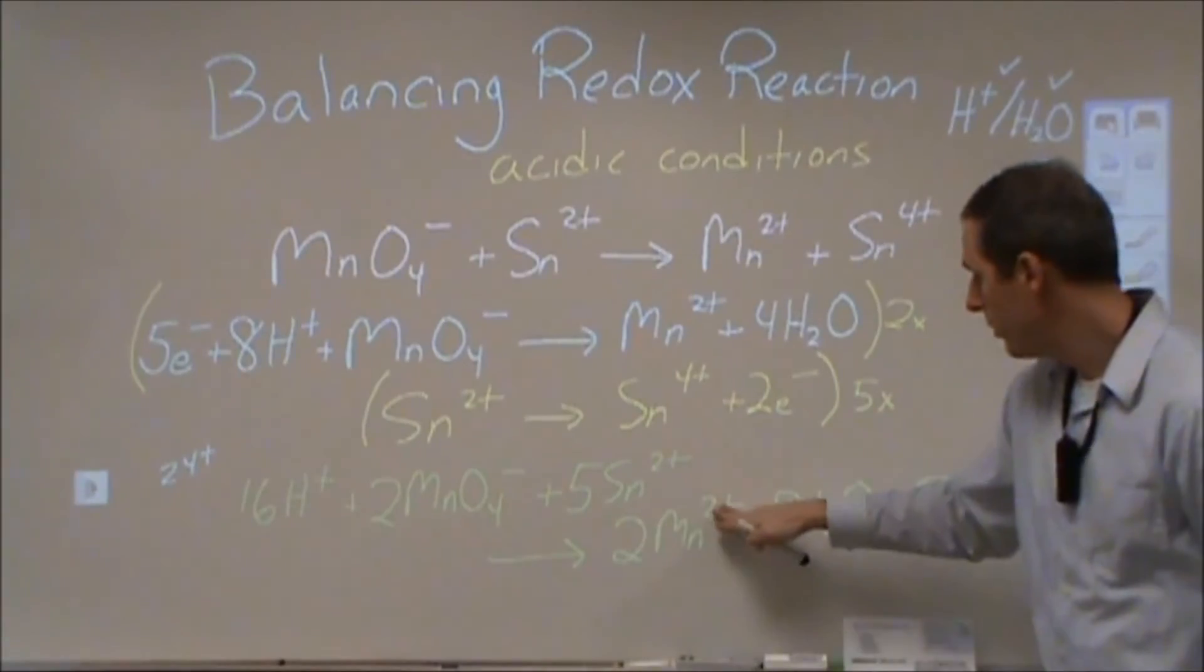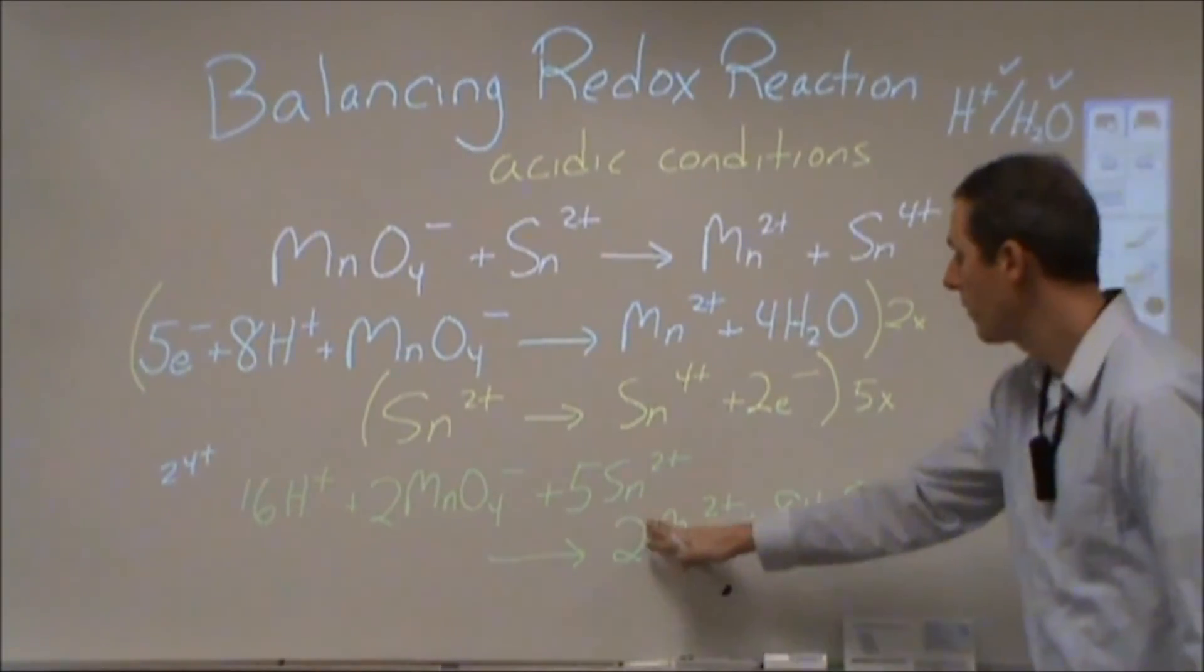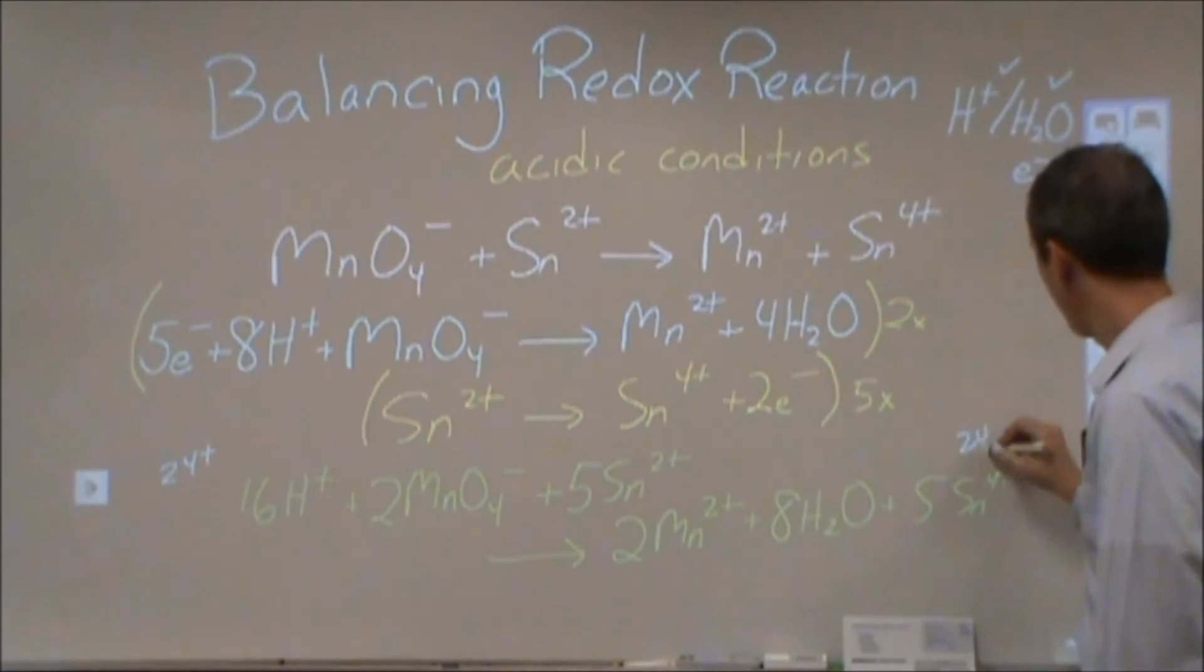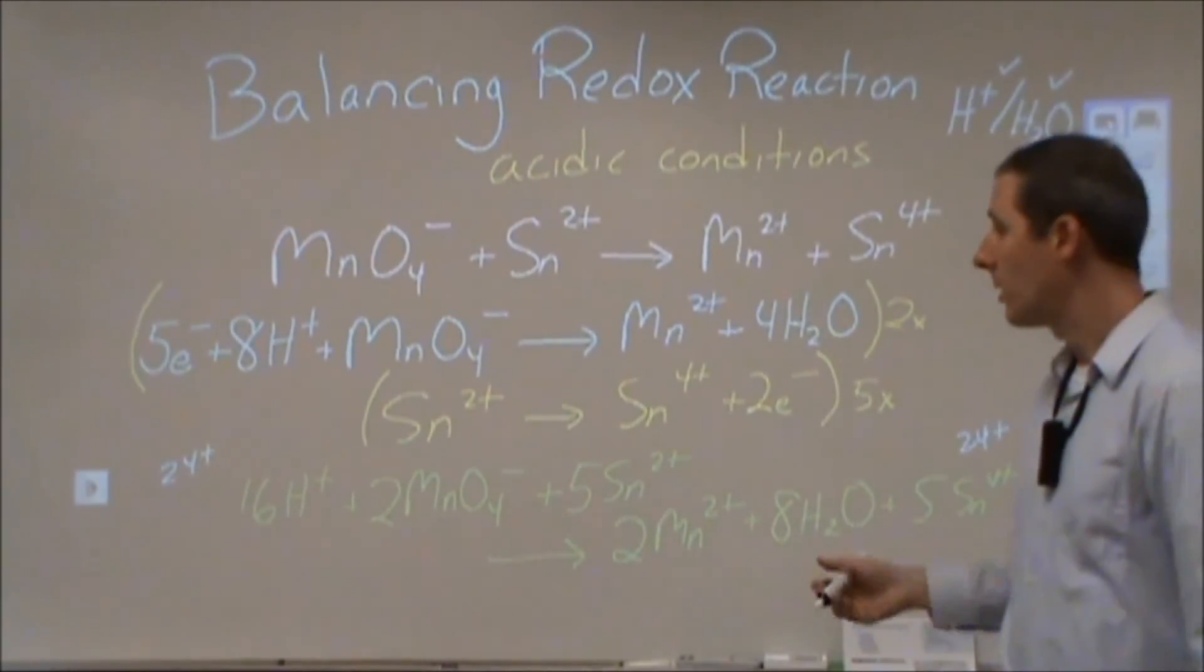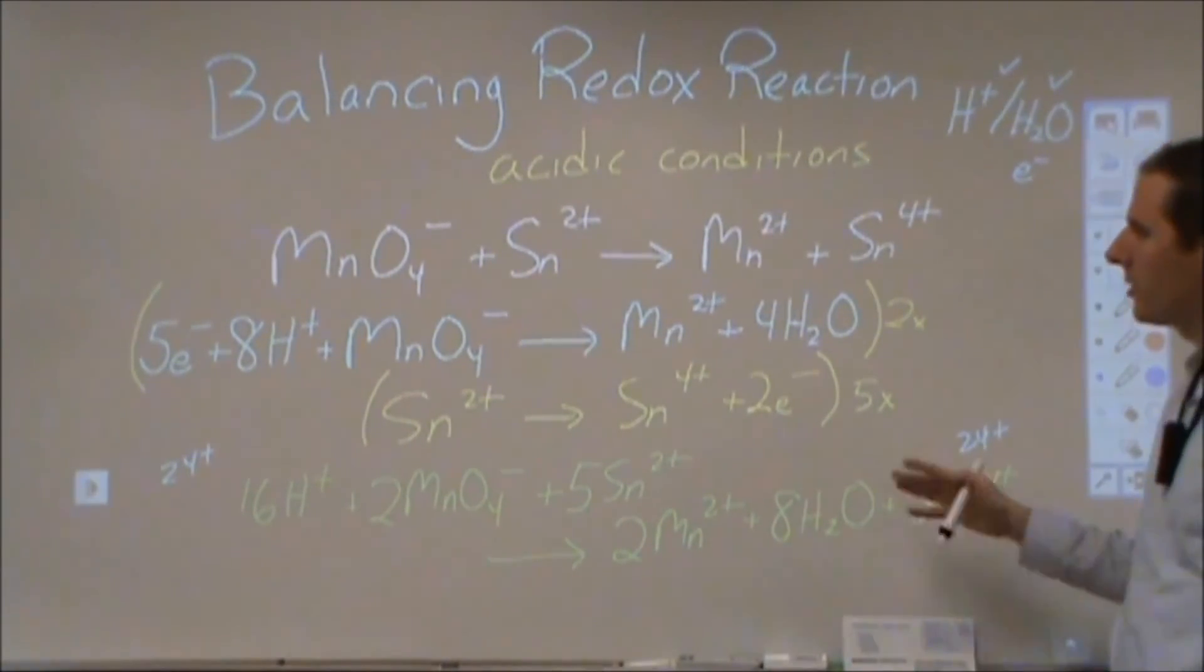On the other side, we have two 2+ and then five 4+. Well, that's twenty, and here's four, and so we have twenty-four positive charges. So our charge has been conserved, as well as our mass, our atoms. And so that's really the two goals of balancing the redox reaction is to balance both.